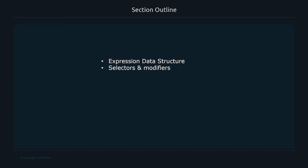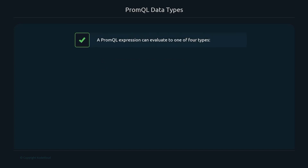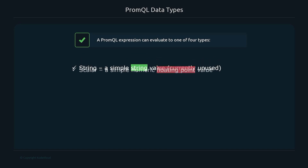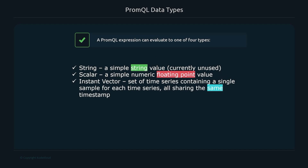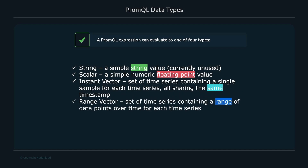When you run a PromQL expression, what gets returned from the Prometheus server can be one of four types. First is a string, which is a simple string value currently unused. A scalar is a numeric floating point value. An instant vector is a set of time series containing a single sample for each time series, all sharing the same timestamp. A range vector is a set of time series containing a range of data points over time for each time series.